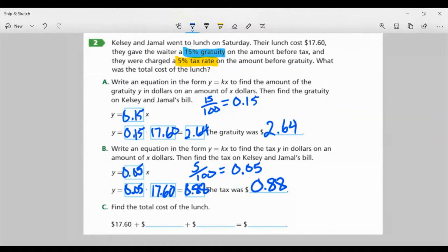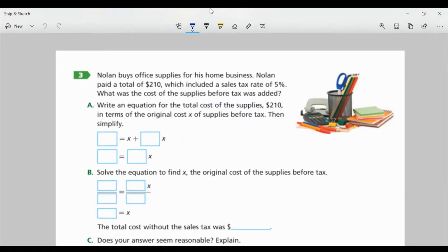Part C: Find the total cost of the lunch. Well, now we just want to add up all our amounts, right? So I have $17.60 plus $2.60 plus 88 cents. And when I add these all together, I will get $21.12. So that is the total cost of the lunch. We're still on page 72. We're looking at task number three.